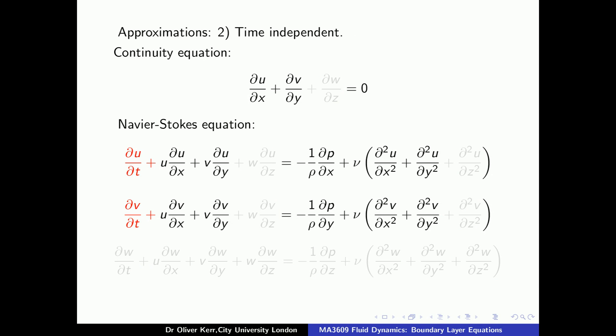The second approximation that we make is that the flow is time-independent. This means that we can remove the two terms at the beginning of the Navier-Stokes equations involving du/dt and dv/dt. The third approximation that we will make is that the y-derivatives are much bigger than the x-derivatives. This isn't much use in the continuity equation because we don't know at the moment the relative sizes of u and v. It will turn out that u is much bigger than v, and so these two terms will be roughly the same size.